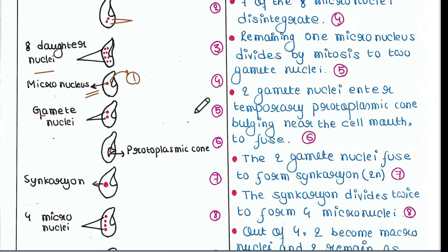The two gamete nuclei enter a temporary protoplasmic cone — a bulging near the cell mouth — to fuse. This protoplasmic cone is visible near the mouth part of the paramecium. The two gamete nuclei enter this cone and they fuse. The two haploid gamete nuclei fuse to form the syncarion, which is diploid.